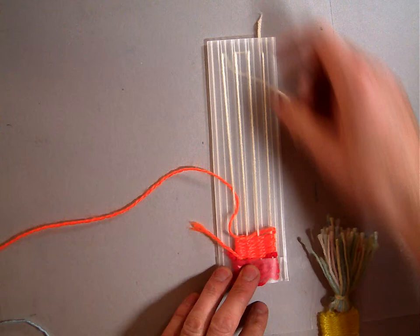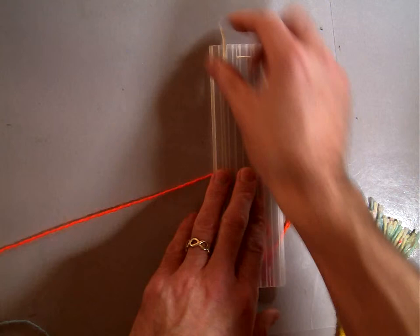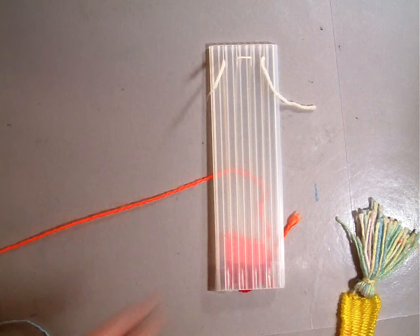So making a tassel looks like this. If you flip your loom over, you've got these two little tails on the end that we left and told you to leave there on purpose.